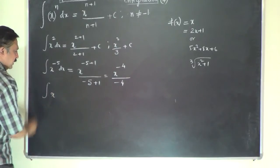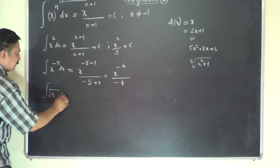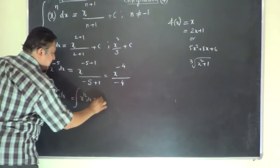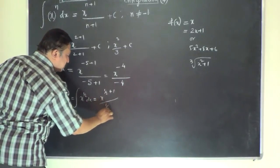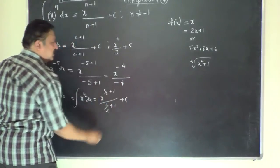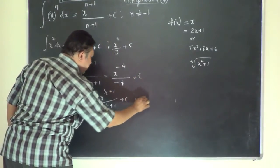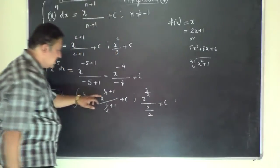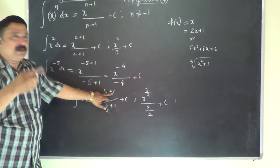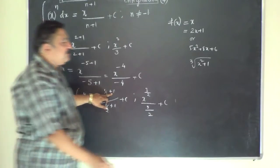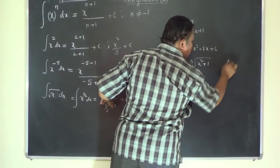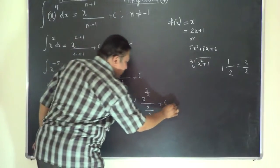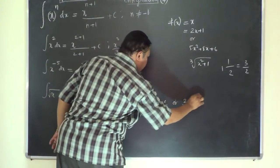If you have the integral of root x dx, you can write it as the integral of x to the power of half dx. That is x to the power of half plus 1 divided by half plus 1 plus c. Since half plus 1 equals 3 over 2, the result is x to the power of 3 by 2 divided by 3 by 2 plus c, or equivalently 2 by 3 times x to the power of 3 by 2 plus c.